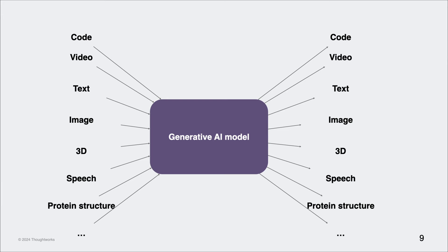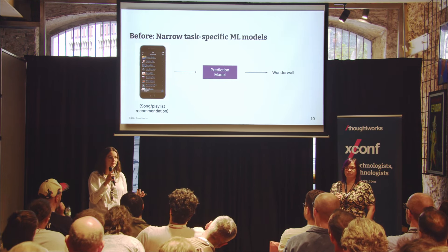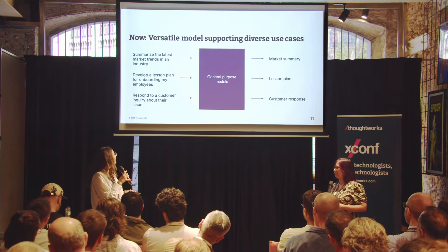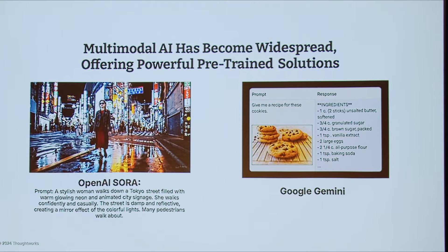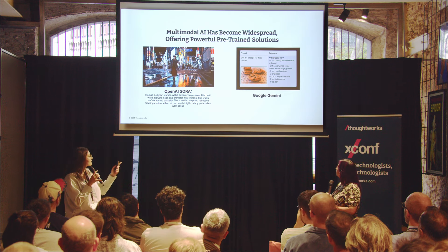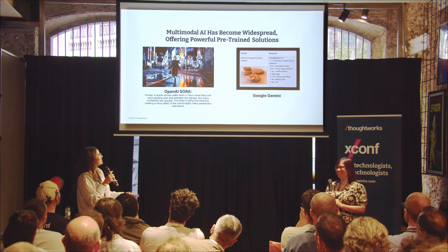What's the key difference between the previous models used for traditional AI versus generative AI? The previous models were really specific for a specific problem — if you were trying to recommend a song to someone, you'd train the model on songs and people's preferences to get a specific prediction. These general purpose models have been trained on so many different things that they can solve many different problems. So if you're a startup with no data, they're a good data source. It's also become widespread for video generation with OpenAI's Sora, and Google Gemini can generate a recipe based on a picture of a cookie.